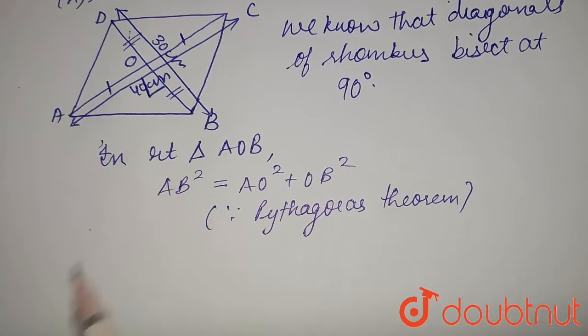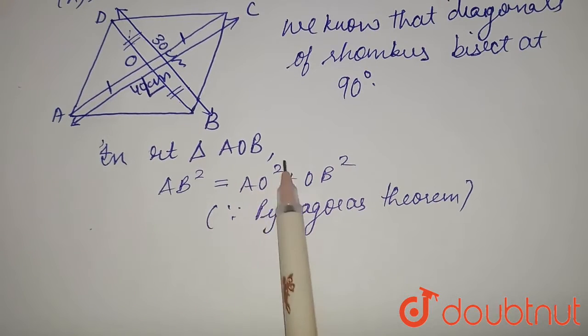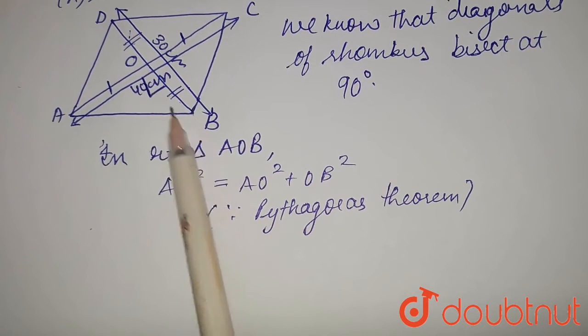So now, what do we need to do? We must find out AB. AO² must be determined and OB² must be determined.